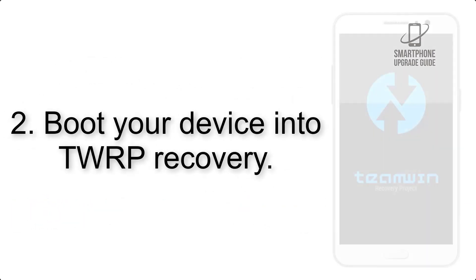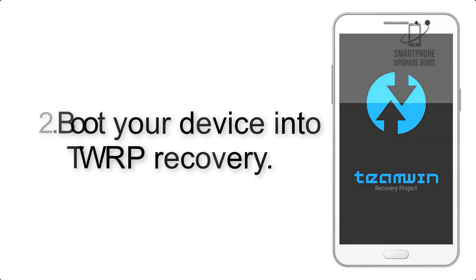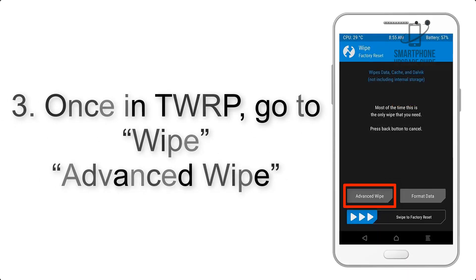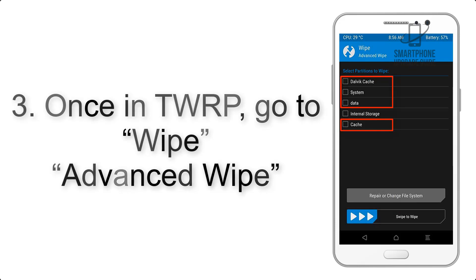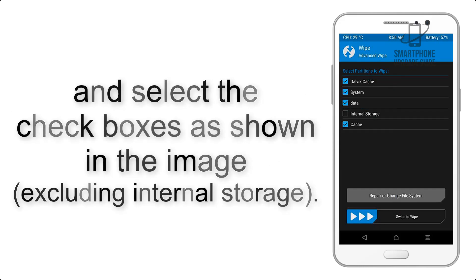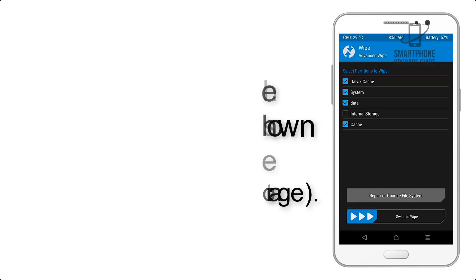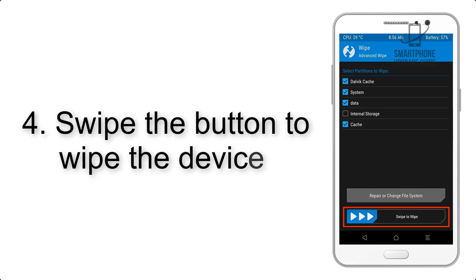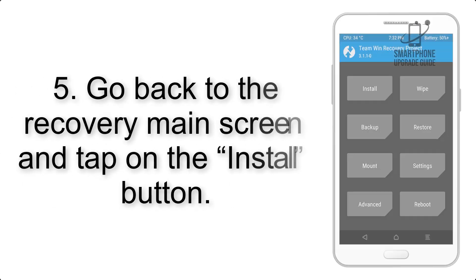Step 2: Boot your device into TWRP recovery. Once in TWRP, click on wipe, then advanced wipe, and select the checkboxes as shown in the image, excluding internal storage. Step 4: Swipe the button to wipe the device.